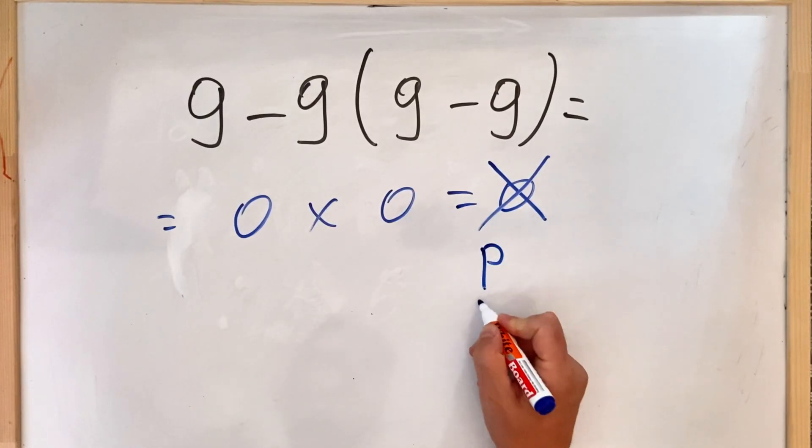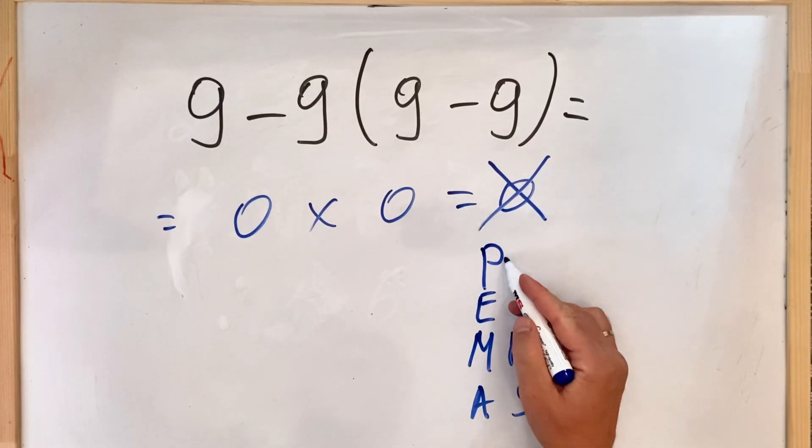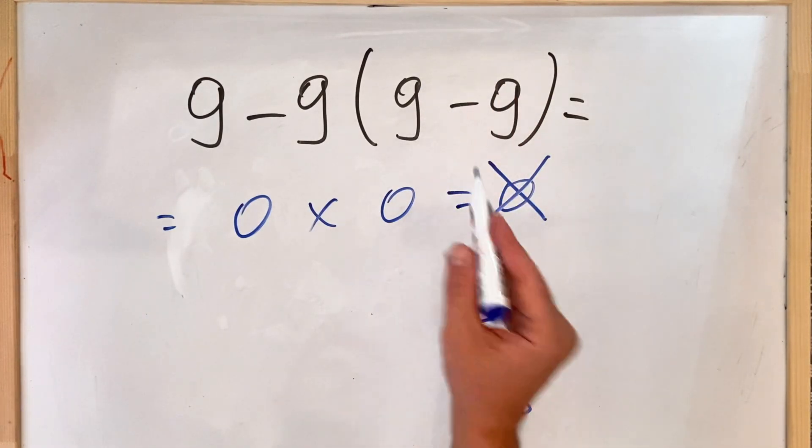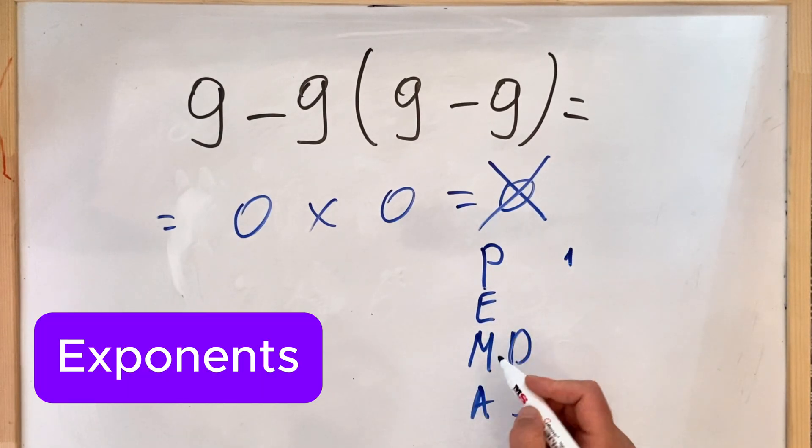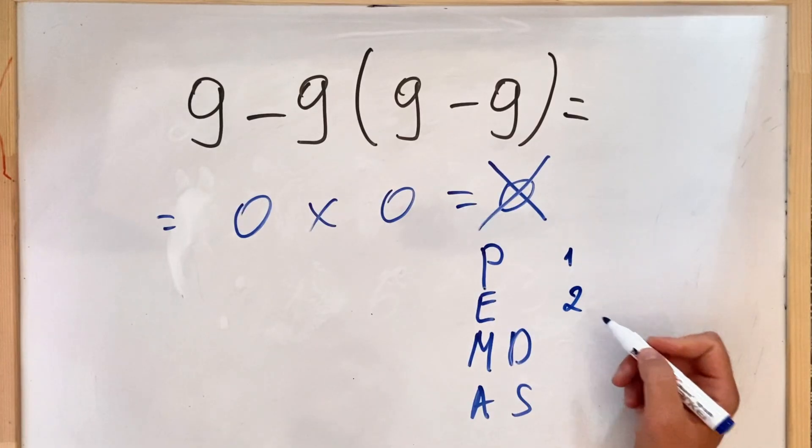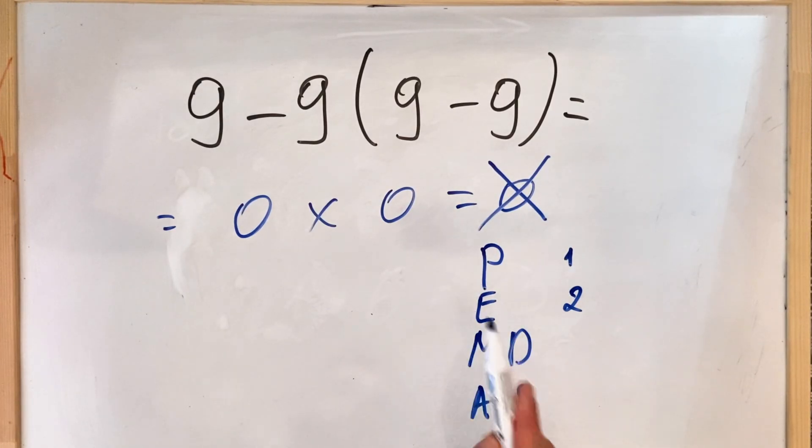Why? Because as you remember, the order of operation rule which is PEMDAS, where P stands for parenthesis. So in this case we do what's needed first inside the parenthesis. Then E stands for exponents. We have no exponents, but if we had, we do it in the second place.